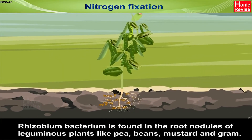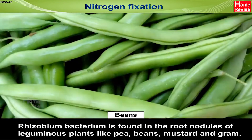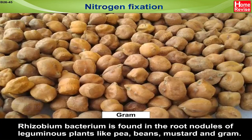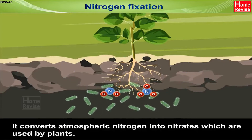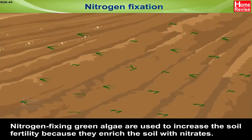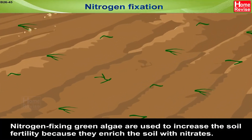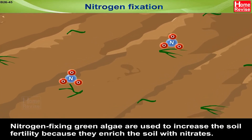Nitrogen Fixation: Rhizobium bacterium is found in the root nodules of leguminous plants like pea, beans, mustard, and gram. It converts atmospheric nitrogen into nitrates which are used by plants. Nitrogen-fixing green algae are used to increase soil fertility because they enrich the soil with nitrates.